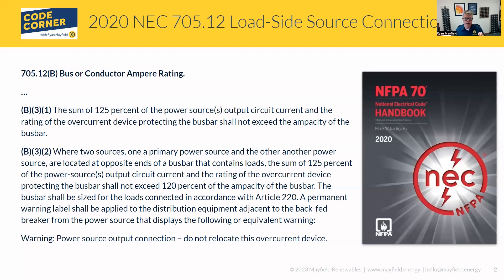If you take 125% of the output current — so 32 amps times 1.25 is 40 — if that 40 amps plus the overcurrent protection for that bus bar, the sum of those doesn't exceed 120% of the bus bar rating, you can make that connection. But you have to put the new solar connection at the opposite end of where the utility connection is coming in. So in a top-fed panel, you'd have 200 amps coming in from the top for the utility, and the 40-amp source for the PV system would go at the bottom.